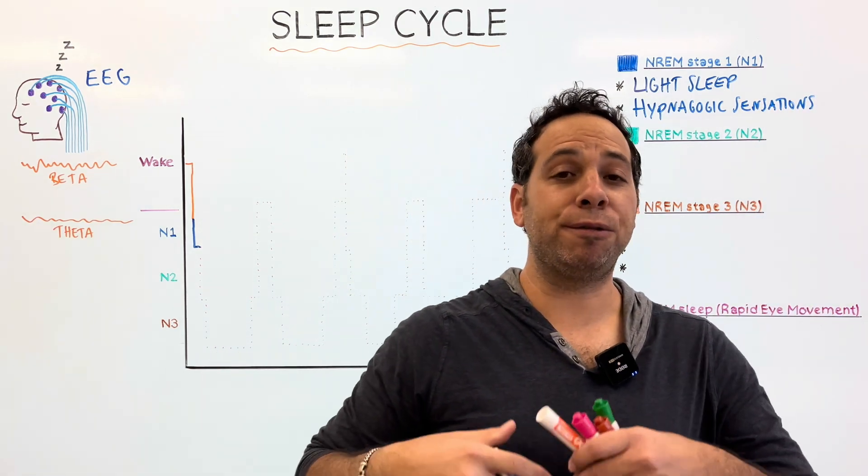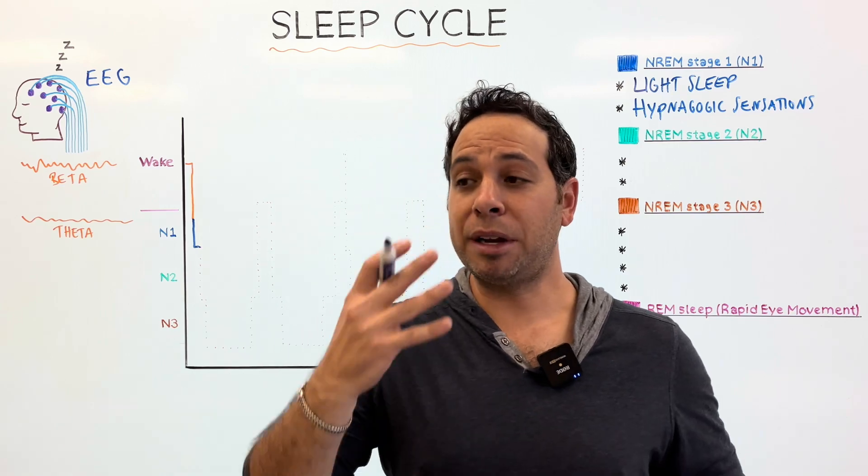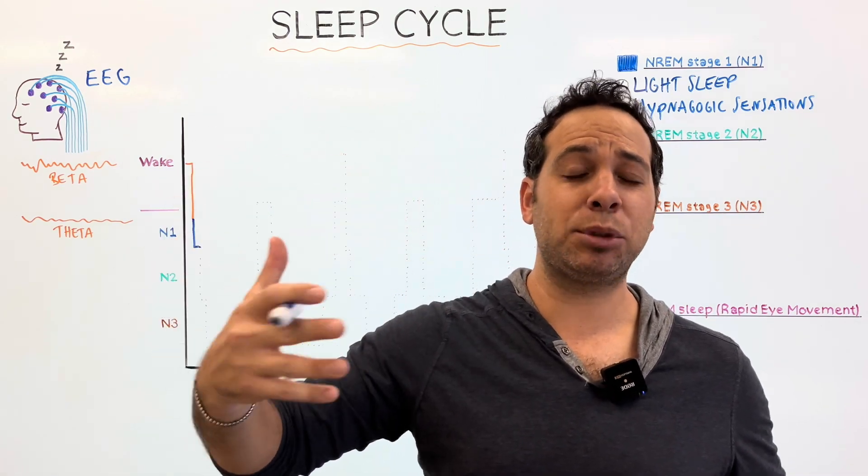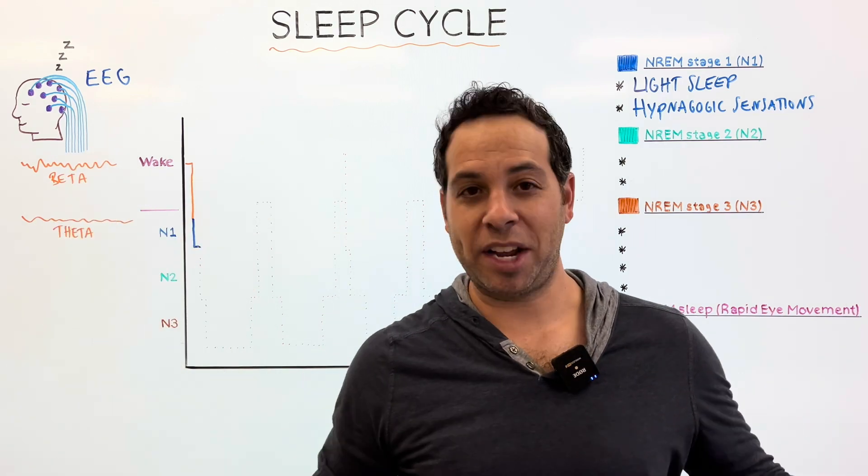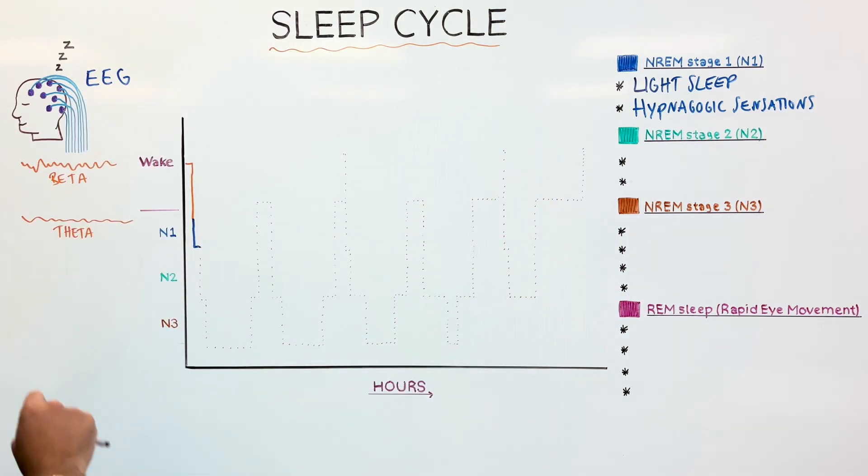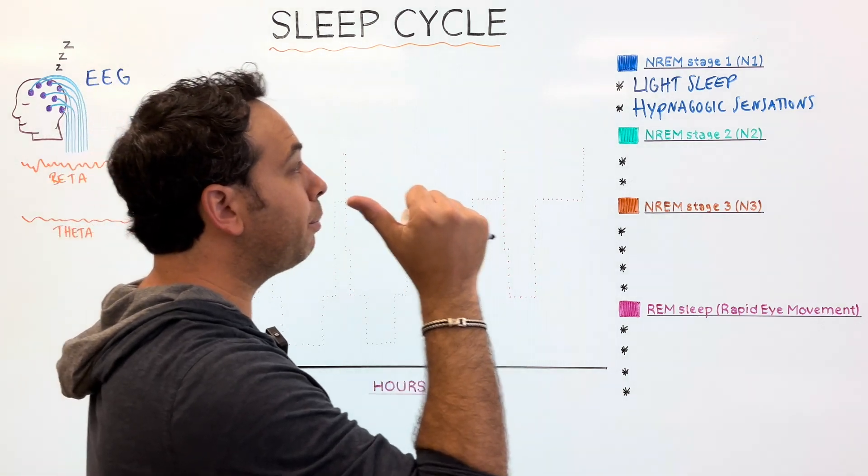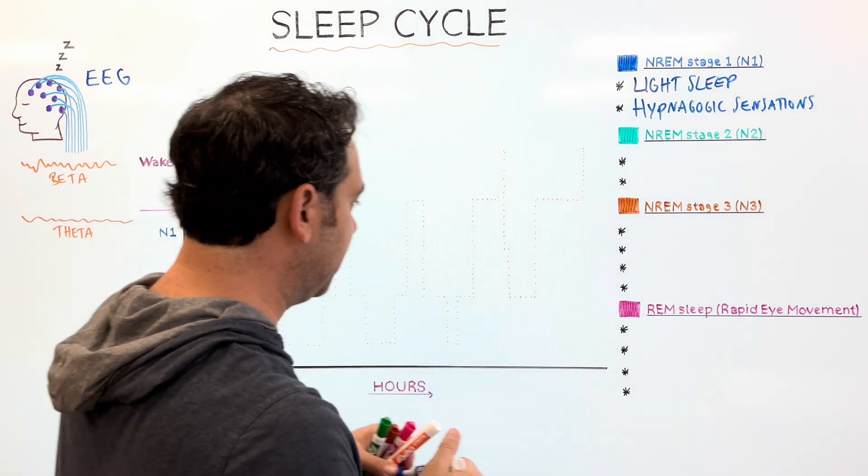These are bizarre, hallucinatory experiences. So people might hear voices, auditory things that are not there. They might visually see things that aren't there, shapes or flashes of light, or they feel like they're falling and they just jerk up and wake up. So, how do I know you've entered stage one? I'm gonna see theta waves on EEG, and I know you might experience hypnagogic sensations.